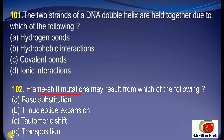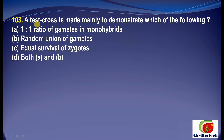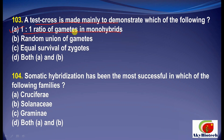Question 3: A test cross is made mainly to demonstrate which of the following? The correct answer is A — demonstration of a 1:1 ratio of gametes in monohybrids. Question 4: Somatic hybridization has been most successful in which of the following families? The correct option is D — both Cruciferae and Solanaceae.